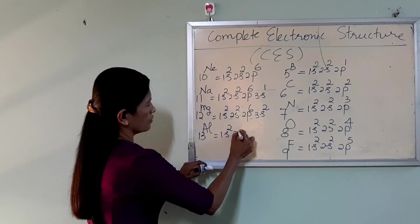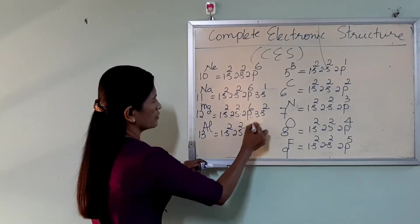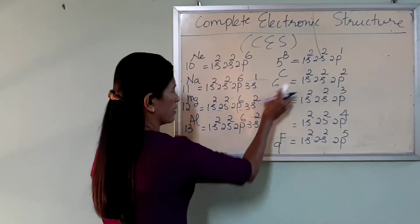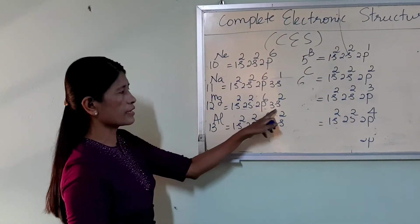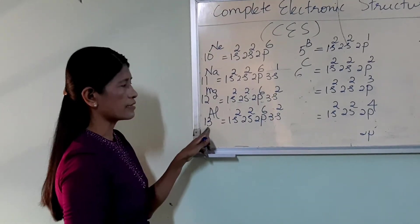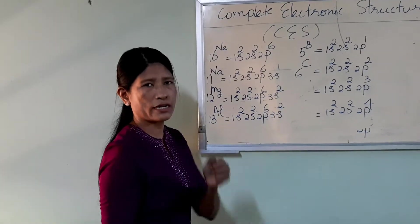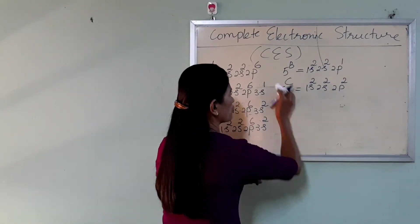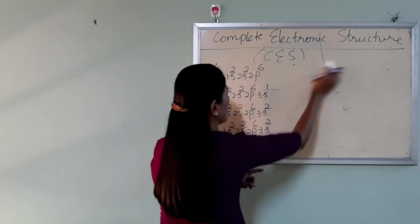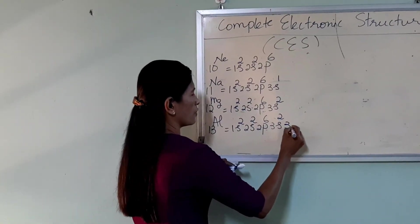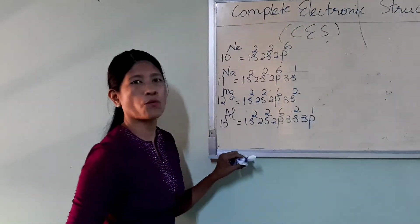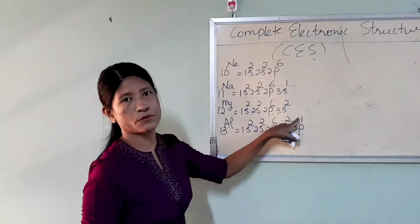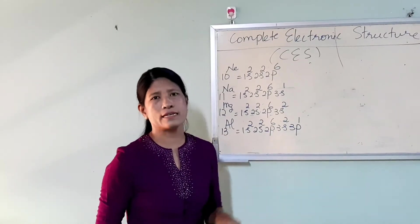12Mg: 1S² 2S² 2P⁶ 3S². 13Al: 1S² 2S² 2P⁶ 3S² 3P¹, giving 6. 14Si: 1S² 2S² 2P⁶ 3S² 3P², and 15P: 1S² 2S² 2P⁶ 3S² 3P³. These subshells can hold 2, 6, or 10 electrons each.